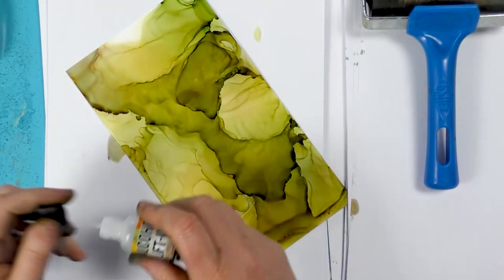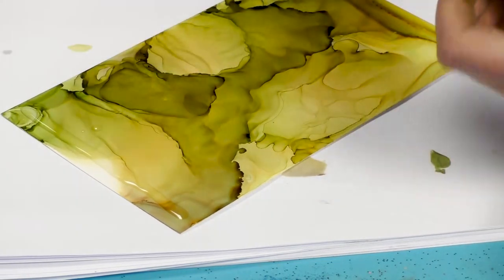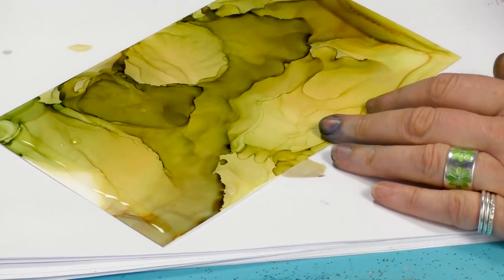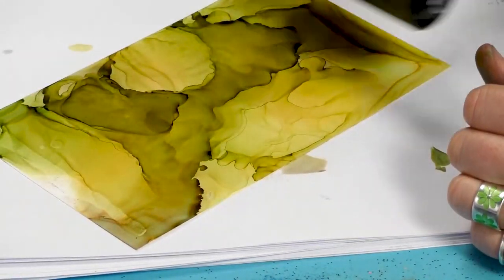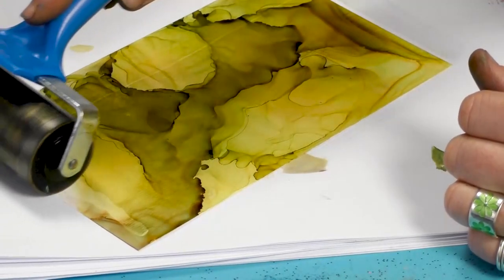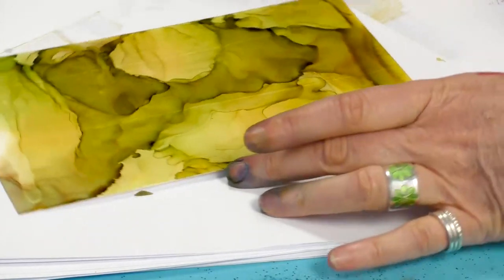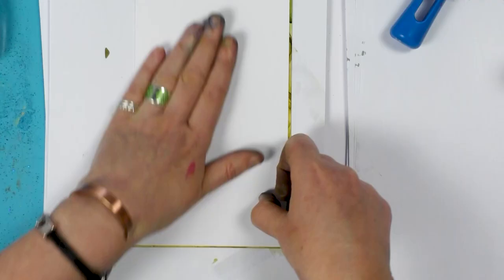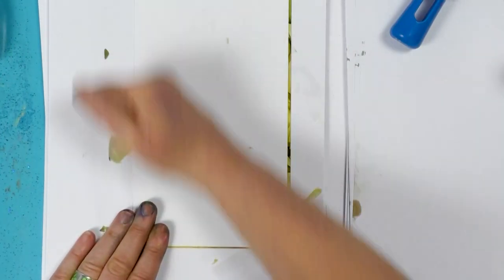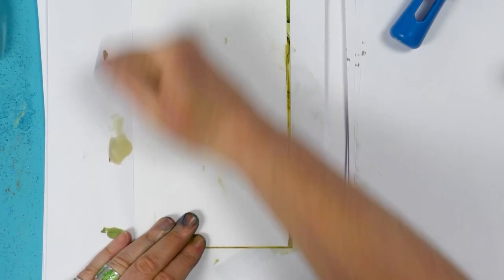So let's just draw a thin line across the top of the Yupo and then we just take the brayer, try and do it centrally, pull that down the page. Try not to put too much pressure on because as we've said before, it can create lines.